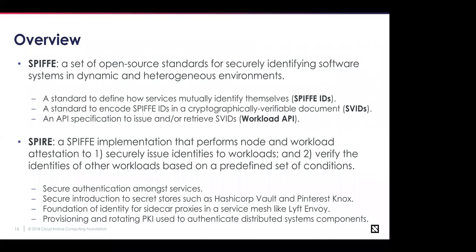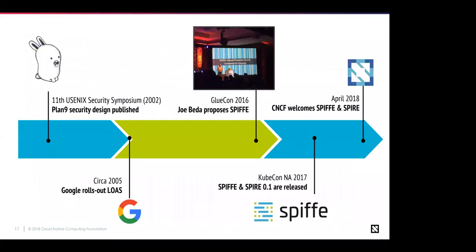Sunil reconnects and moves to the timeline slide. SPIFFE/SPIRE's history can be rooted back to around 2002, with work happening inside Plan 9 at Bell Labs. Key learnings came from the initial implementation at Google around 2005 through its Borg infrastructure. The project was deployed and launched at KubeCon North America 2017, then welcomed into the CNCF sandbox in April 2018 — at which point Andrew and others participated in the keynote to talk about the project.